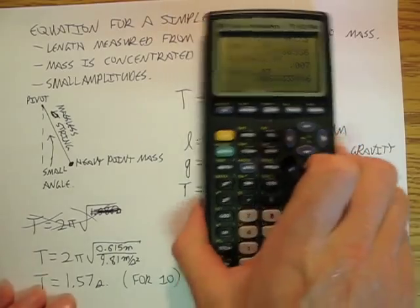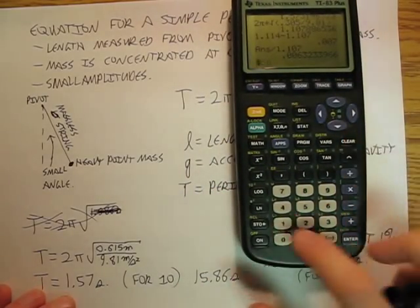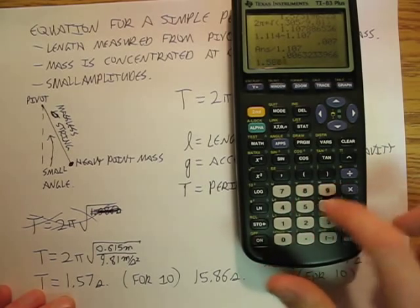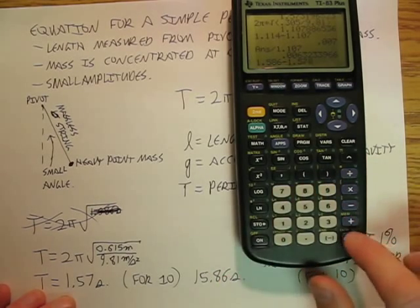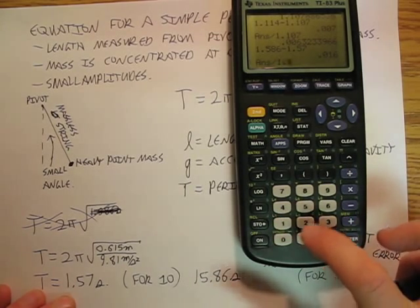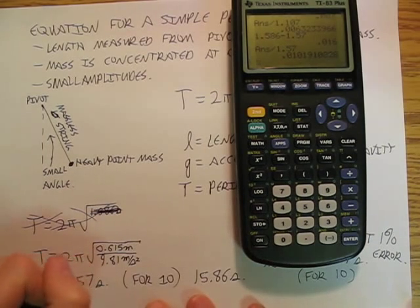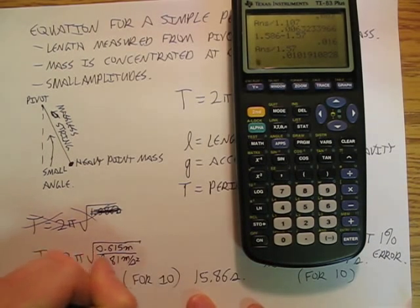And over here, if I do 1.586 minus 1.57, take that, divide it by 1.57, and I'm getting about still 1% error.